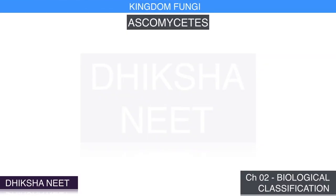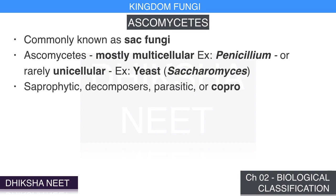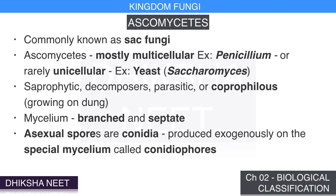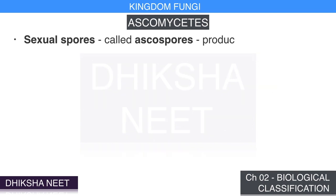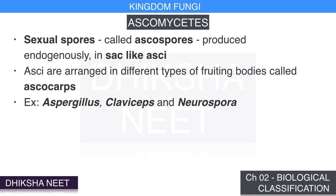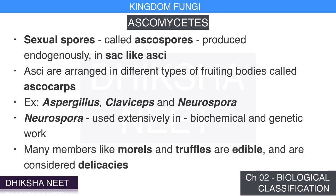Ascomycetes, commonly known as sac fungi, are mostly multicellular (e.g., Penicillium) or rarely unicellular (e.g., yeast Saccharomyces). They are saprophytic, decomposers, parasitic, or coprophilous (growing on dung). Mycelium is branched and septate. Asexual spores called conidia are produced exogenously on conidiophores. Sexual spores called ascospores are produced endogenously in sac-like asci, which are arranged in fruiting bodies called ascocarps. Examples include Aspergillus, Claviceps, and Neurospora — the last used extensively in biochemical and genetic work. Morels and truffles are edible members considered delicacies.